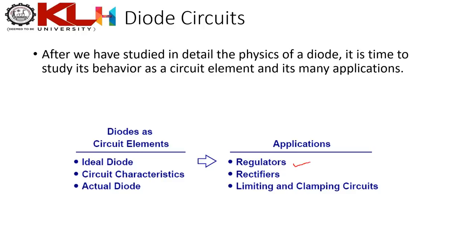Most regulators you see in daily life are on refrigerators — there is a box sitting on it which is a voltage regulator. Do not confuse this with a fan regulator; it is a voltage regulator that protects you from voltage surges or dips. Especially about 20 years ago, voltage surges were very high, so regulators were essential.